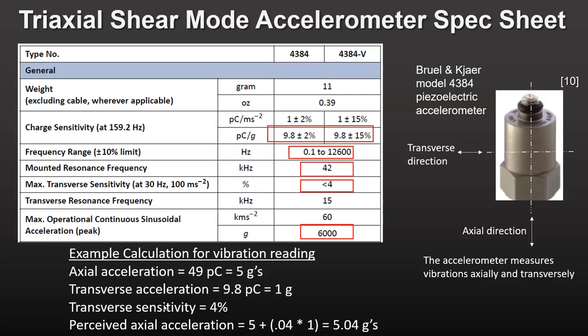The accelerometer will pick up a small amount of transverse vibrations when measuring vibration in its axial direction. This is shown in the diagram on the right side of this slide and in a specification called max transverse sensitivity, which is typically measured at only one frequency — 30 Hz in the case of this sensor. This means the axial acceleration you measure will be a combination of both axial and transverse accelerations. For example, if the actual axial acceleration were 5 g's, which would be a charge of 5 picocoulombs, and the transverse sensitivity is 4 percent, the accelerometer would tell you the axial acceleration is 5.04 g's, not 5 g's.